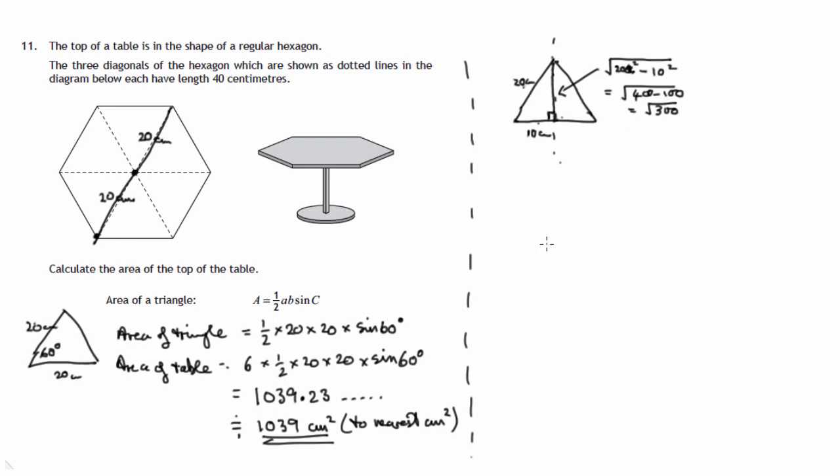And that's the height of the triangle. So the area, we're going to use the half base times height formula. The base is 20, that's the whole base of the triangle. And the height of the triangle, we now know, is the square root of 300. So the area of the tabletop will be 6 lots of that. 6 times a half of 20 times root 300.